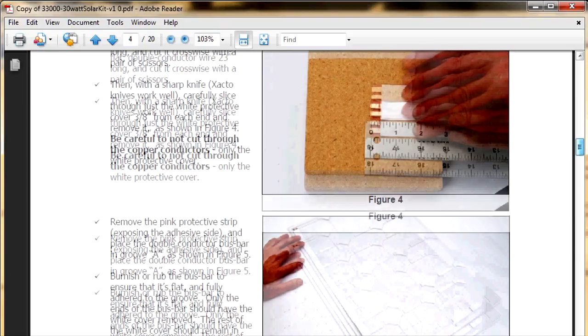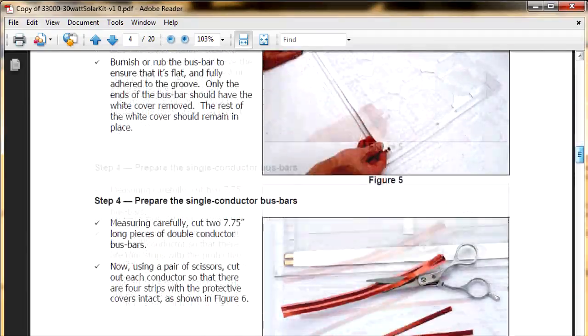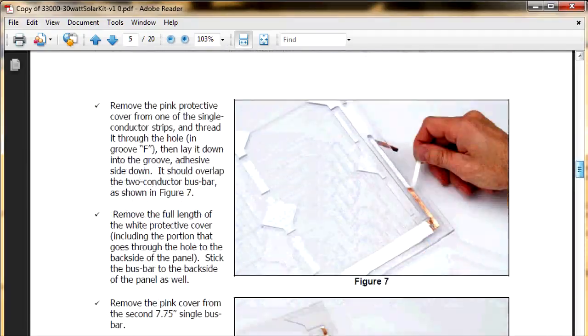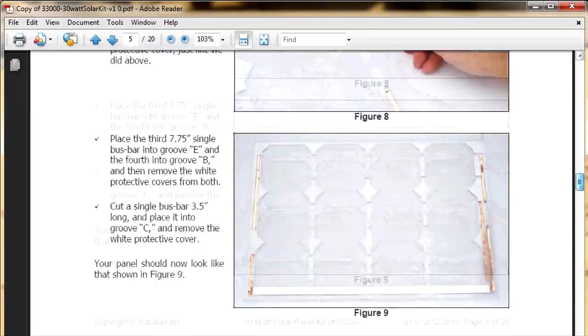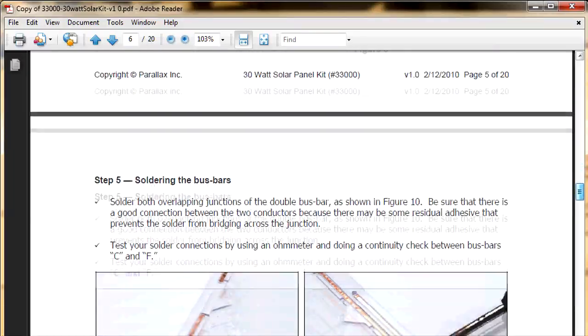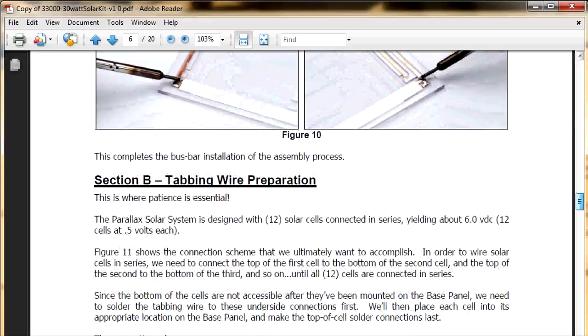The first step in the assembly instructions is to lay your copper traces on the plastic panel. As this is a fairly straightforward step, we won't show it here, but be sure to follow the included instructions to do so. Next is pre-tabbing all 12 of your cells. Now you should keep in mind that assembling your solar panel is not a race, so go slowly and really enjoy the process.